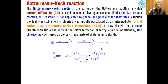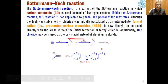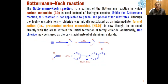One modification of the Gatterman reaction is the Gatterman-Koch reaction. Here, if we replace hydrogen cyanide with carbon monoxide, the products are the same but the catalyst formed is different. This variant is known as the Gatterman-Koch reaction. An important difference is that the Gatterman reaction can be used for phenols and phenol ether substrates, but the Gatterman-Koch reaction is not applicable to phenols and phenol ether derivatives.